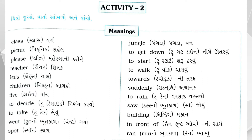Jungle — J-U-N-G-L-E — Jungle, એટલે જંગલ. To get down — T-O-G-E-T-D-O-W-N — To get down, એટલે નીચે ઉતરવું. To start — T-O-S-T-A-R-T — To start, એટલે શરૂ કરવું. To walk — T-O-W-A-L-K — To walk, એટલે ચાલવું.